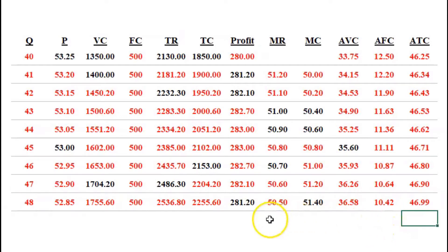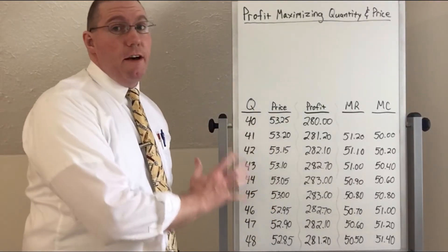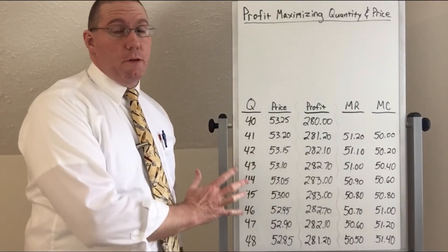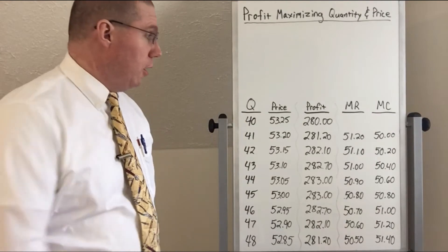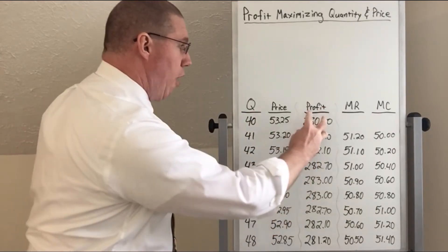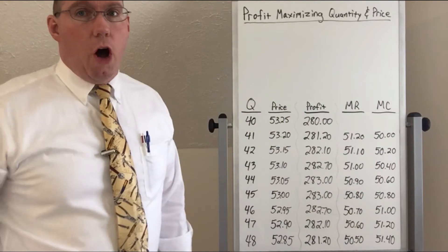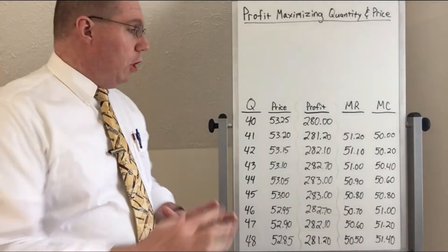And that is the whole table. You may want to pause it right now and then check your answers. So now what I've done is I've brought over five of the variables from the table that we just completed: quantity and price, profit, marginal revenue, and marginal cost.